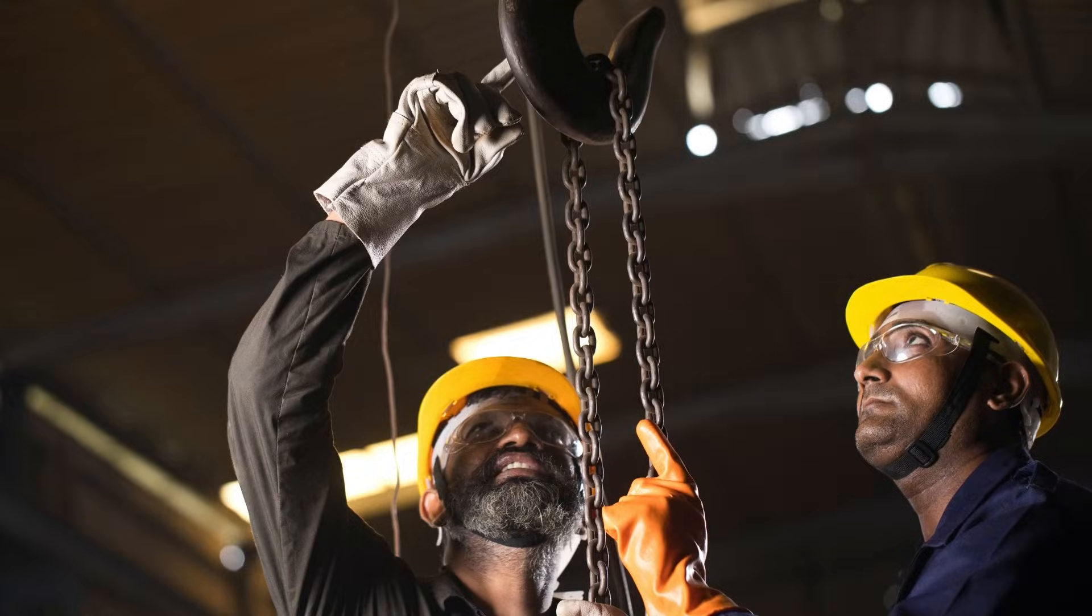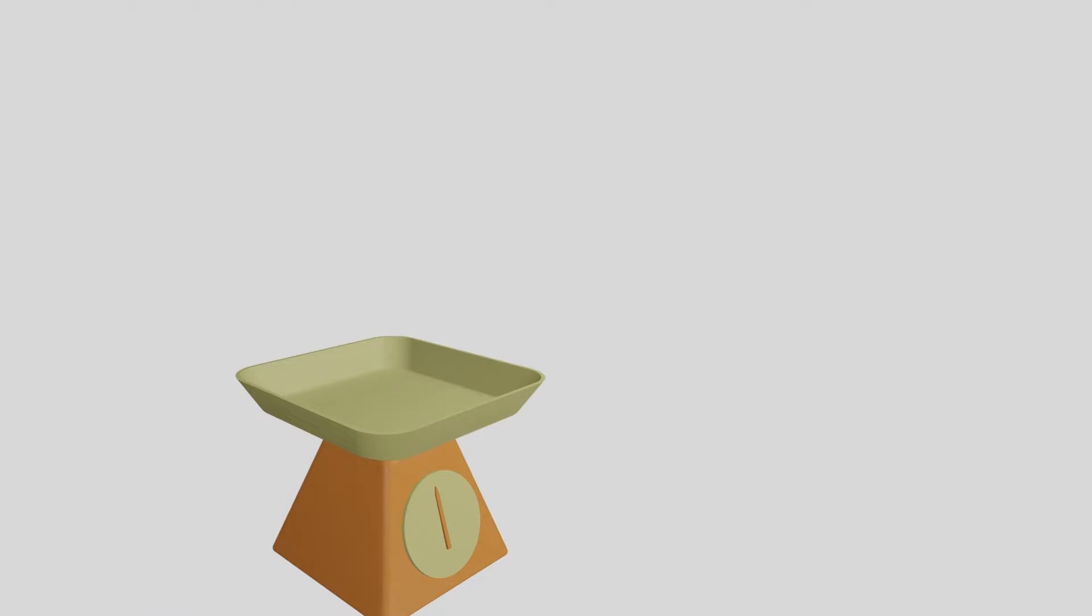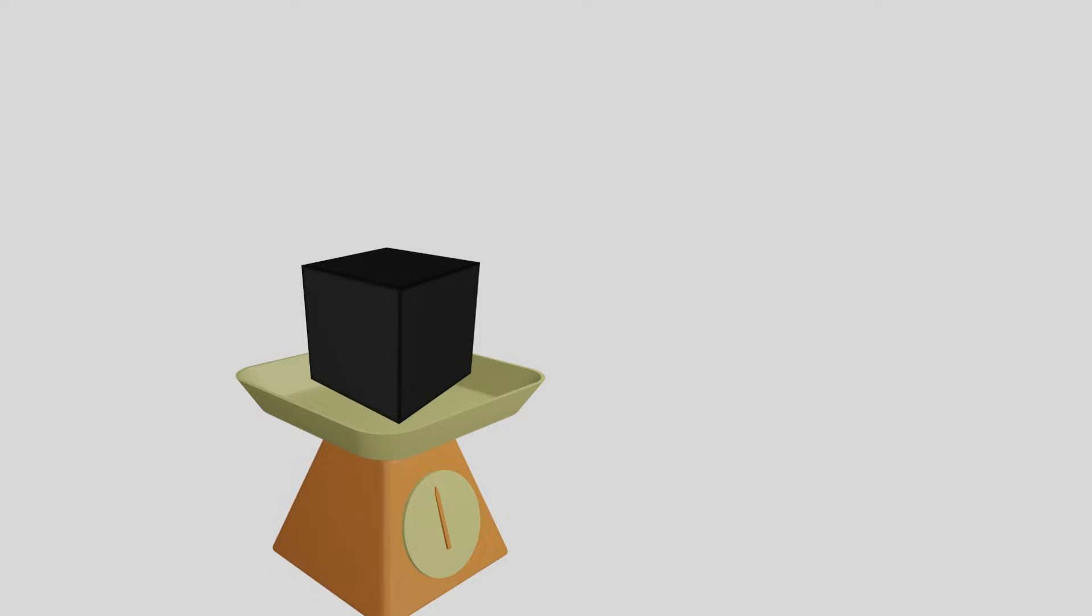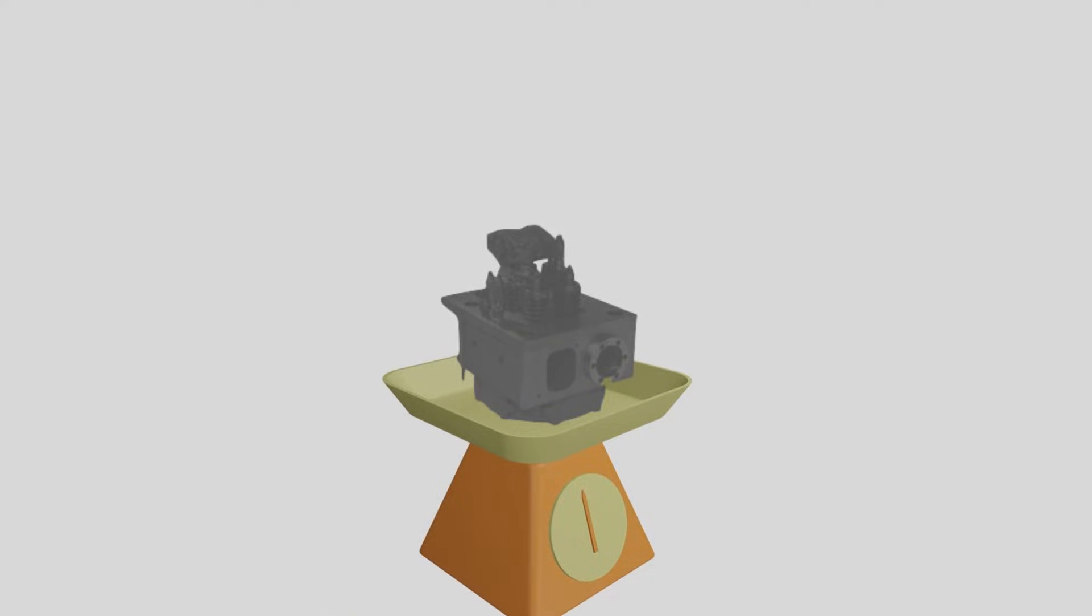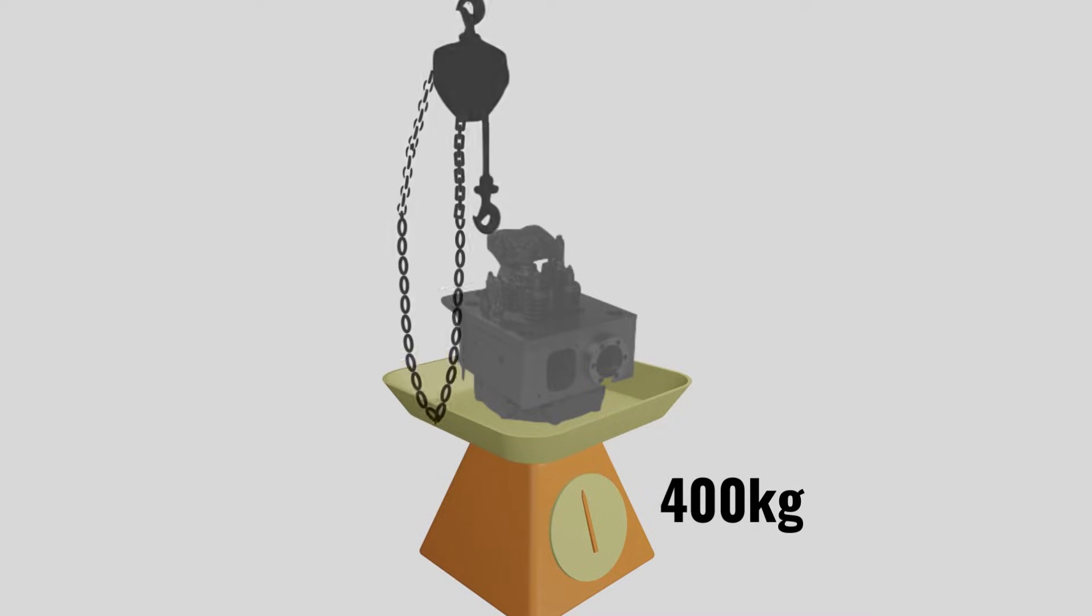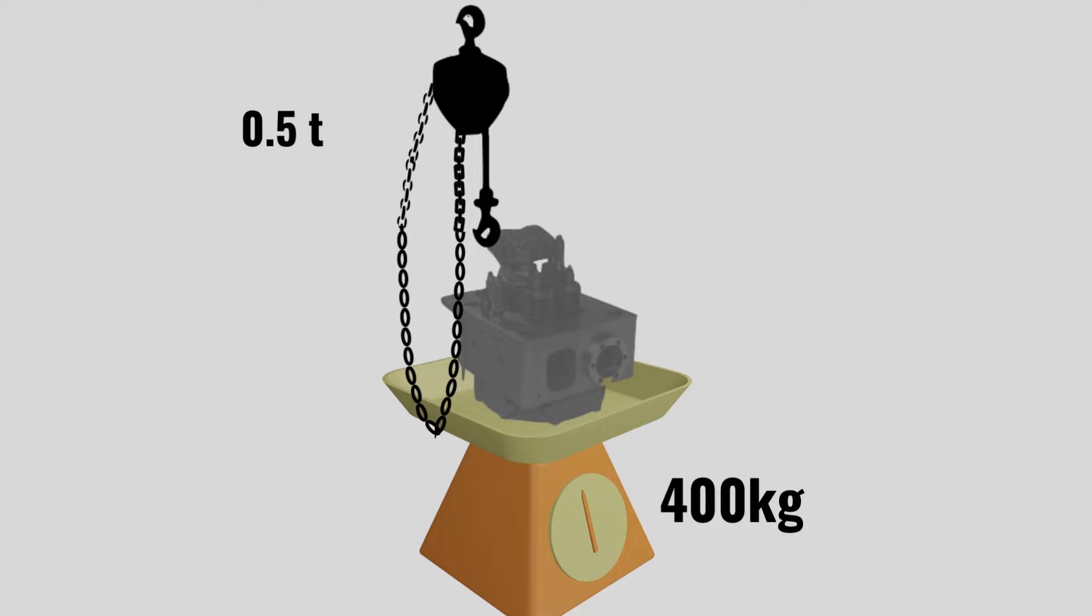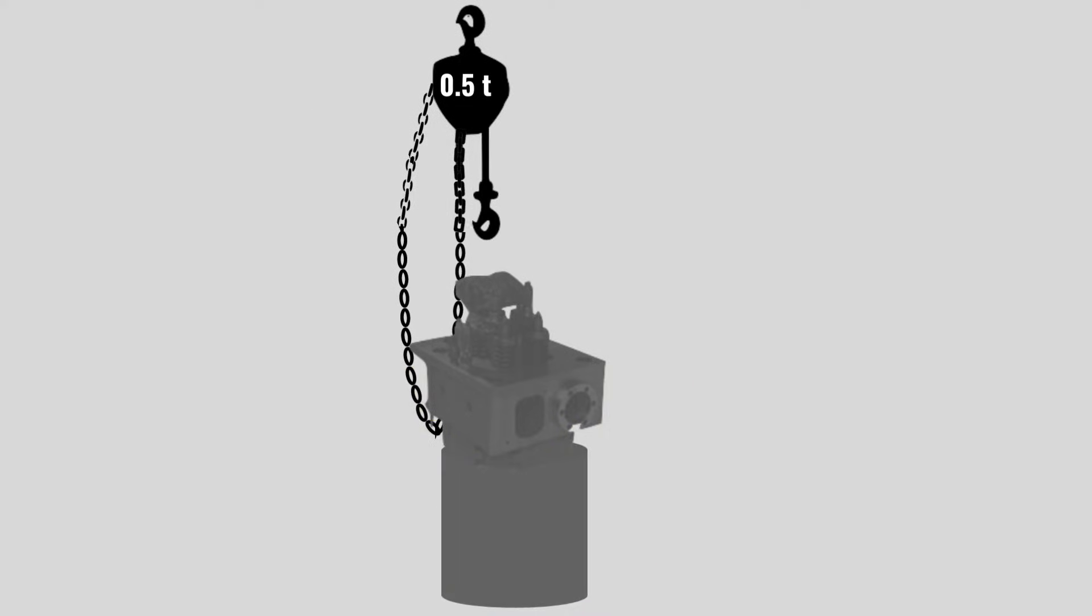The first procedure is to select the right chain block for the task, which depends on the load being lifted. For instance, if we need to raise the cylinder head of the auxiliary generator engine, which is around 400 kilos, a half-ton chain block would be ideal. Using a chain block of higher value is always wise, as a stuck part will draw more load than expected.